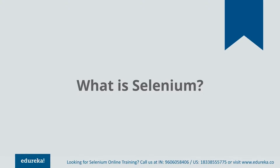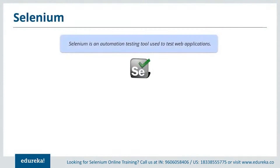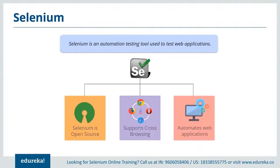Selenium is an automation tool used to test web applications. It is an open source portable framework used to automate test cases in a web application. It can run on different browsers like Chrome, Safari, Opera, Explorer, and so on, and supports cross-browser testing too. Talking about the languages used to write test scripts, Selenium supports different programming languages like Java, Python, Ruby, C#, etc. The most commonly used language among these is Java because of its user-friendly behavior.